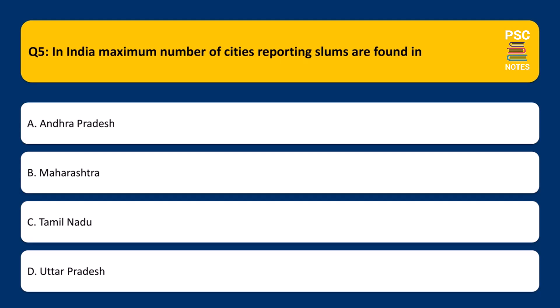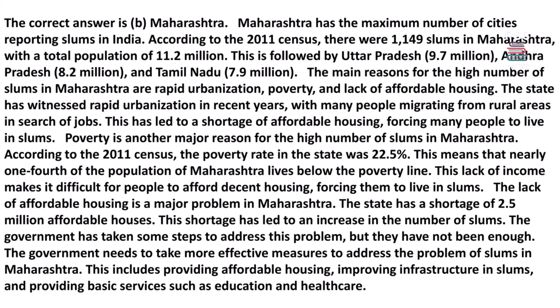In India, the maximum number of cities reporting slums are found in: a. Andhra Pradesh. b. Maharashtra. c. Tamil Nadu. d. Uttar Pradesh. The correct answer is b. Maharashtra.